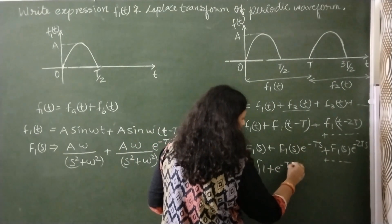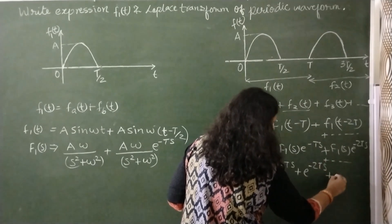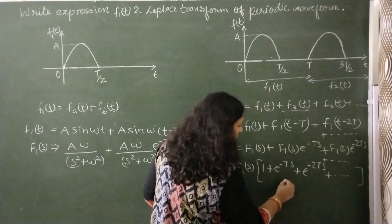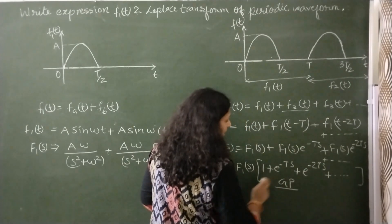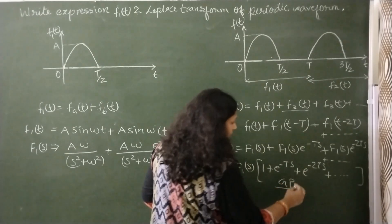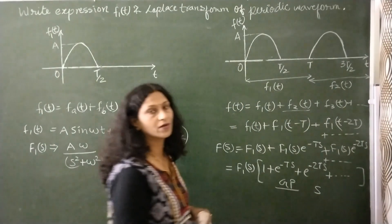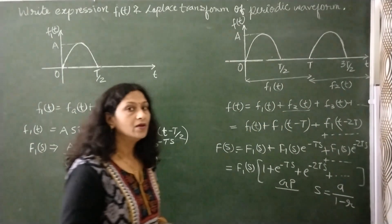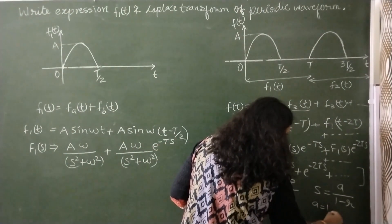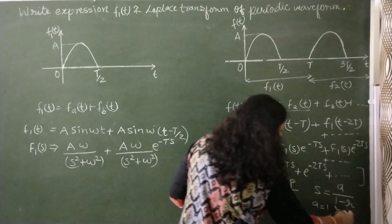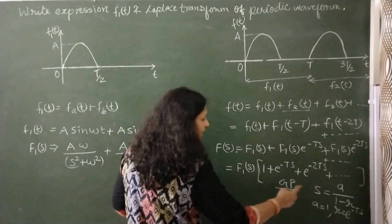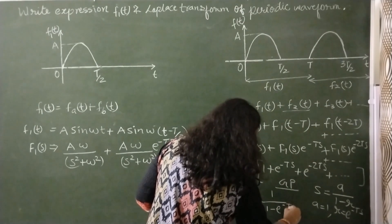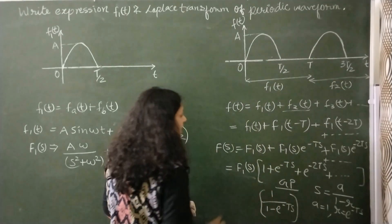After factoring, we get an infinite geometric progression (GP) with F1(S). The sum of an infinite GP is given by A/(1 − R), where A is the first term (which is 1 here) and R is the common ratio e^(−TS). So the sum equals 1/(1 − e^(−TS)), and the full Laplace transform is F1(S) multiplied by this.